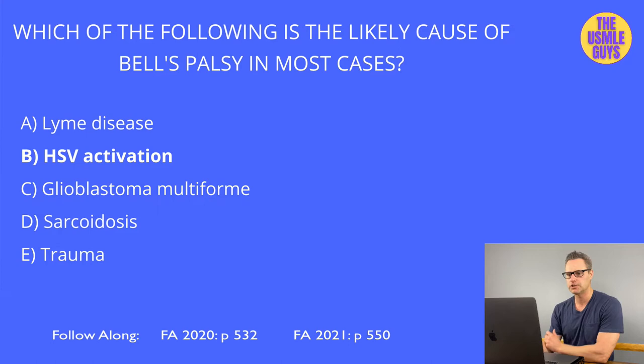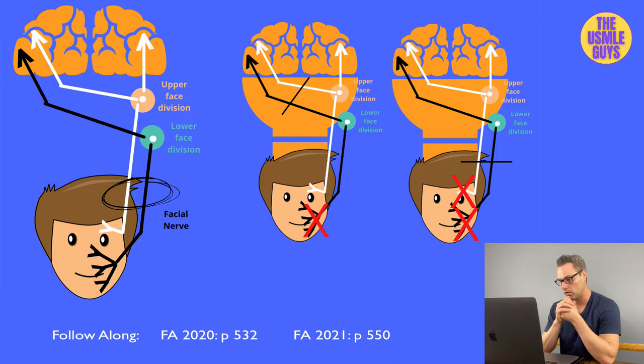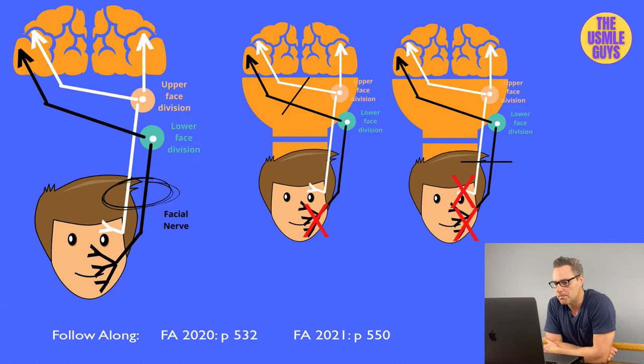The correct answer is B: HSV reactivation. It's really important to understand the innervation to the muscles of the upper and lower face. The innervation to the upper face originates on both sides of the brain, while innervation to the lower face comes from the contralateral side only.